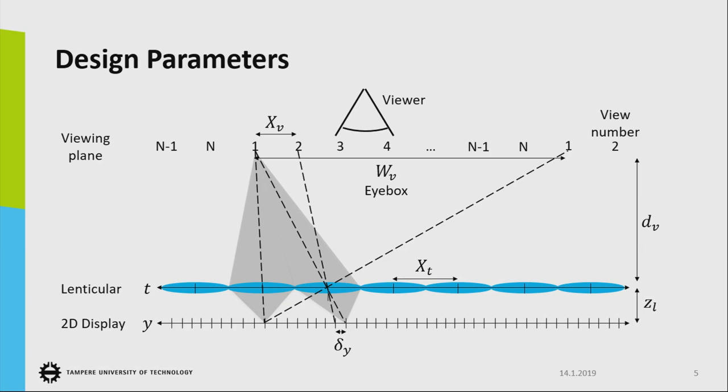If you go deeper into the design parameters, we can start by two-plane parametrization, starting from denoting the lenticular sheet with t plane and 2D display with y plane. Ideally, each lens here in this lenticular plane focuses the pixels of this display at the so-called weaving plane where the viewer is located, so that the image is seen sharp. As you can see, the pixels behind each lens focus at some arbitrary point which is called the view.